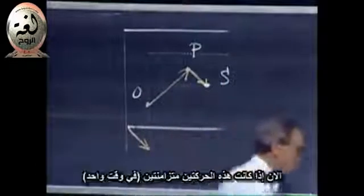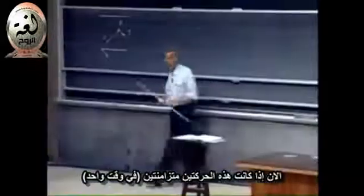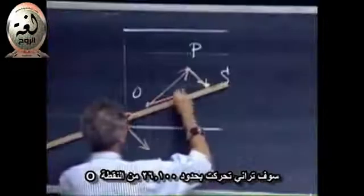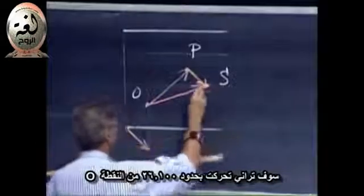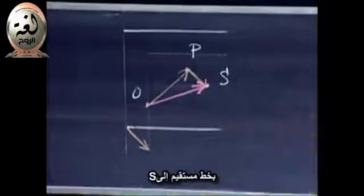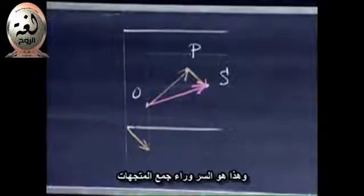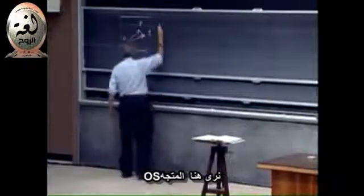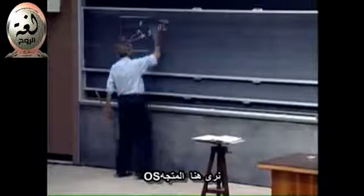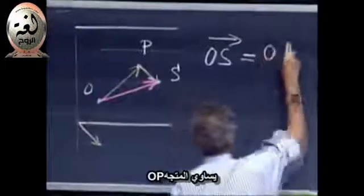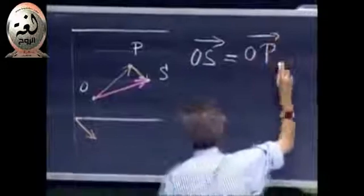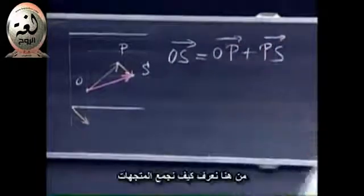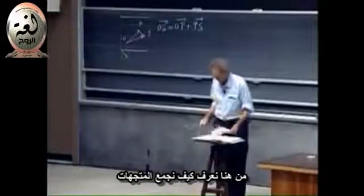Now, if these two motions take place simultaneously, then what you will see from where you're sitting, you will see me move in 26100 from O straight line to S. And this holds the secret behind the adding of vectors. We say here that the vector OS, we put an arrow over it, is the vector OP with an arrow over it plus PS. This defines how we add vectors.